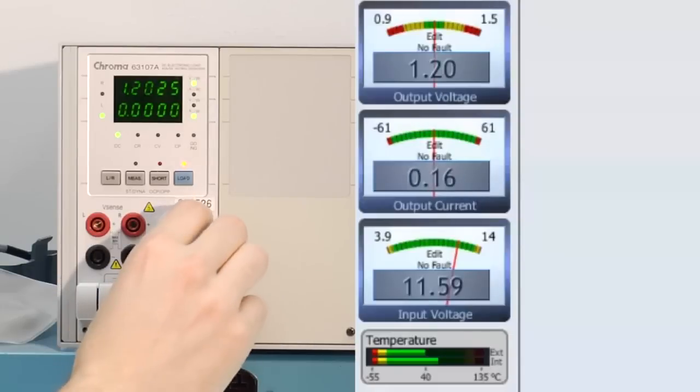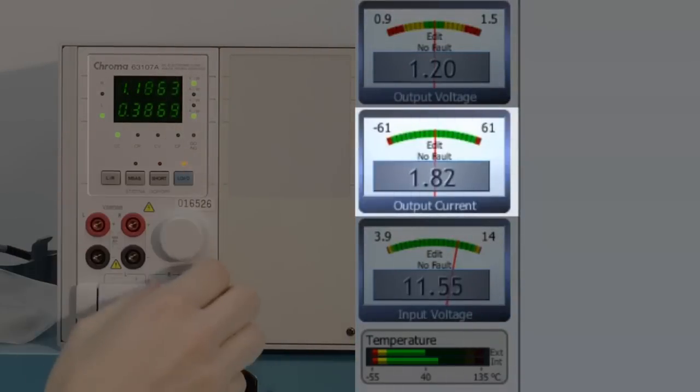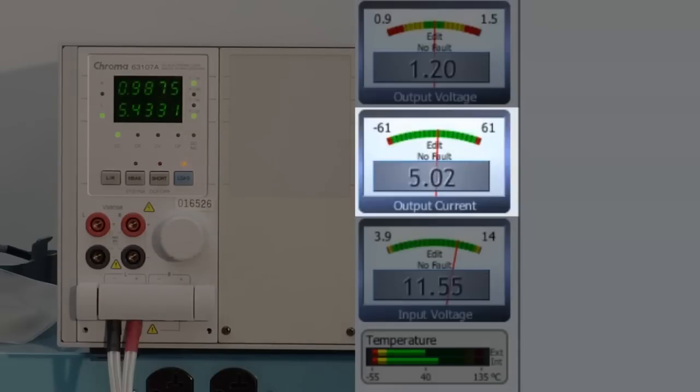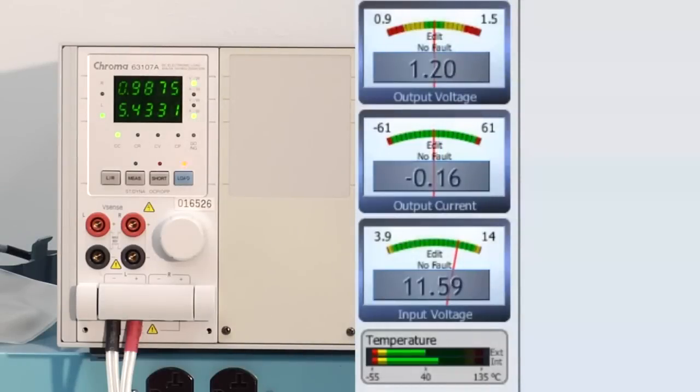Another parameter we can vary would be the load. So we have a load box connected. We just turn it up from zero current up right now is at 0.3 and we continue increasing it and you're going to see that the GUI will continuously monitor the load current seen on the board. So right now the load box is reading a little bit low because of the voltage drop across the cabling but still you get an accurate measurement of what's occurring exactly at the point of load converter.